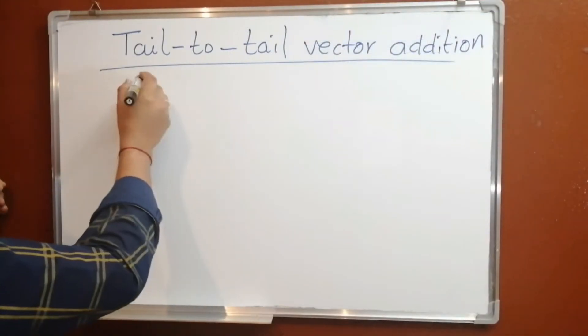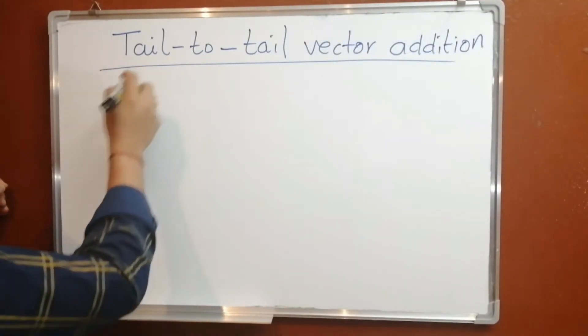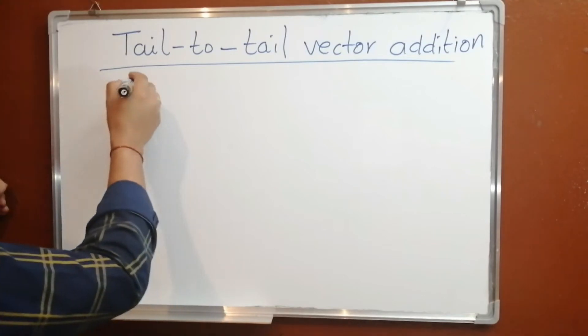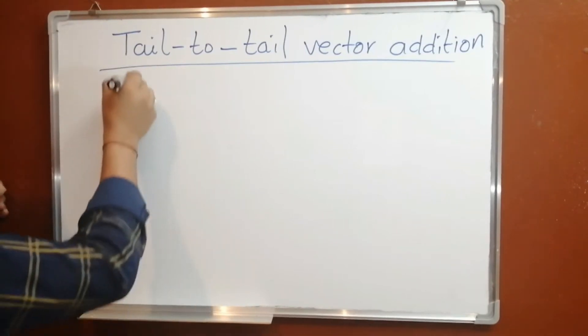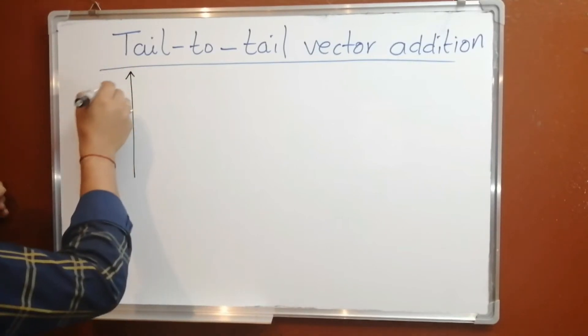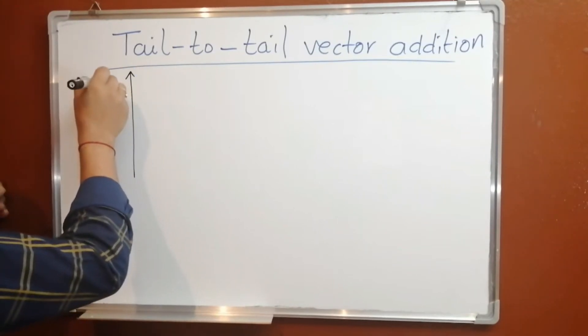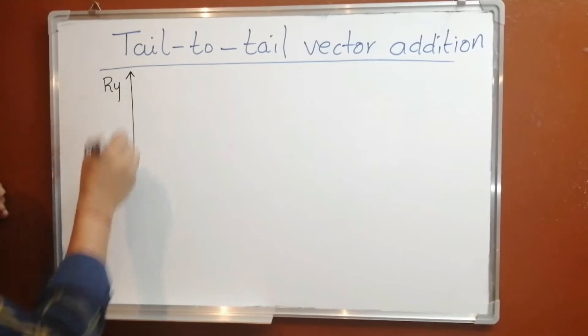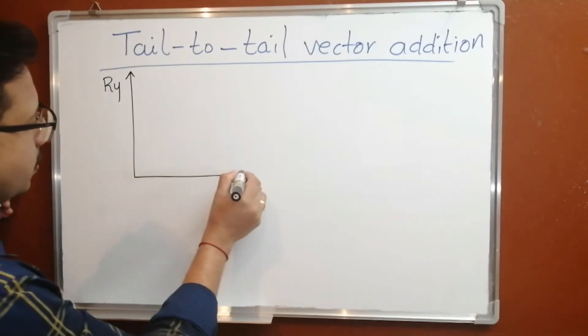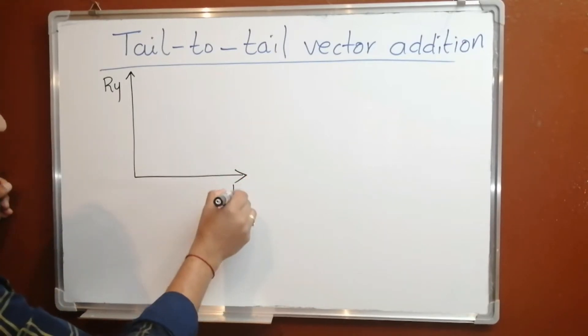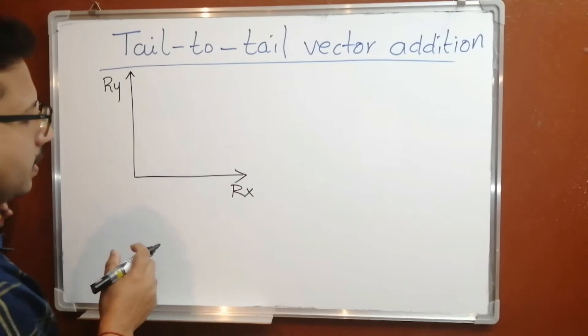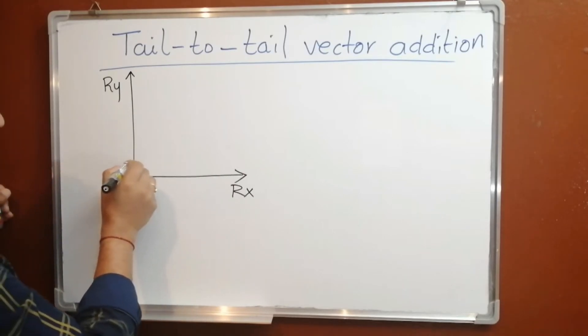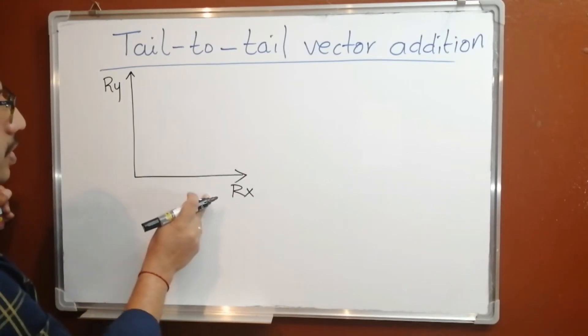Let's consider two vectors. We consider perpendicular vectors in tail-to-tail vector addition. Let's say this is a vector which is along the y-axis. We can say generally this is vector r-y. And another vector which is along the x-axis which is perpendicular to r-y. That is r-x. The angle between two vectors is 90 degrees. That's why they are known as perpendicular vectors.